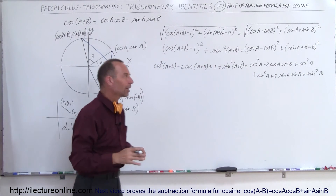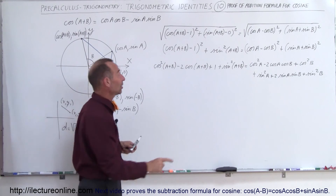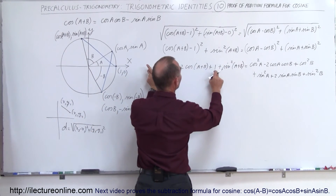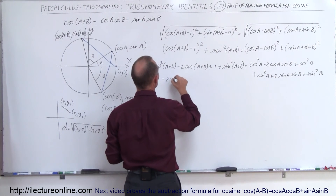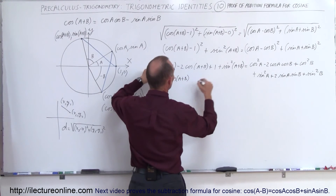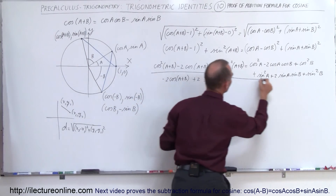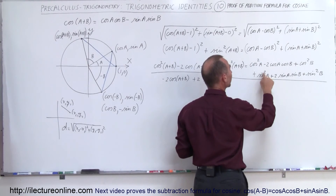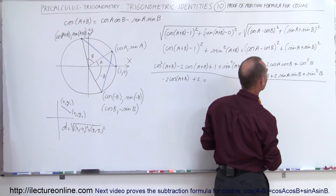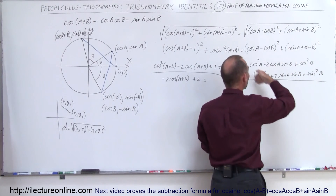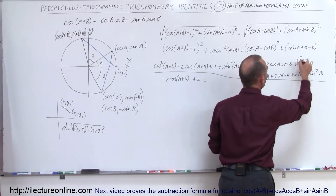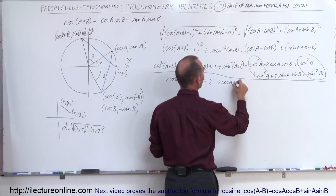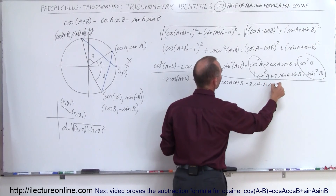Now there's a lot of simplification. On the left side, cosine squared of A plus B plus sine squared of A plus B equals one by the Pythagorean identity, so the left side becomes one minus two times cosine of A plus B, plus one, giving two minus two times cosine of A plus B. On the right side, cosine squared A plus sine squared A equals one, and cosine squared B plus sine squared B equals one, so the right side becomes two minus two times cosine A times cosine B plus two times sine A times sine B.